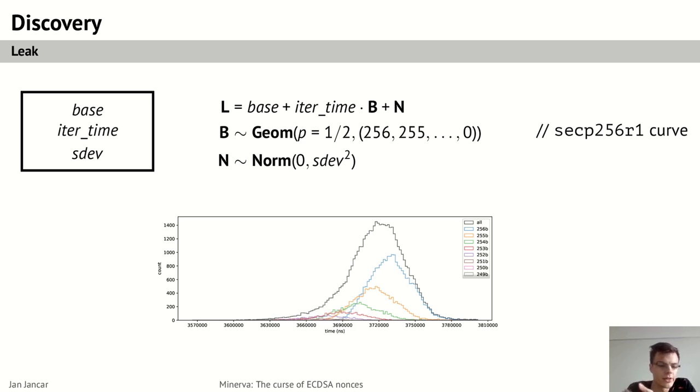Below you can see basically a histogram of the, I think, Athena smart card leakage, where the signature time histogram is on the x-axis, and you can see it split into the different groups based on the bit length of the random nonce.